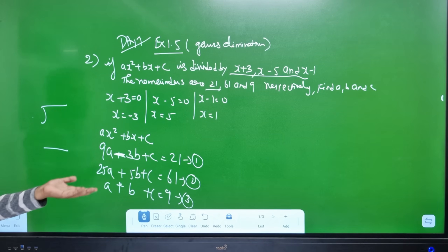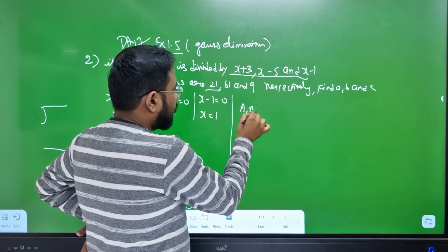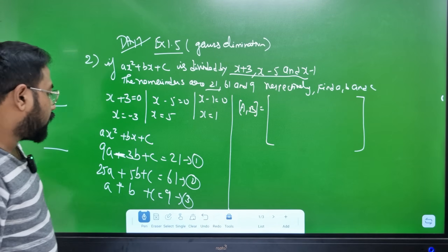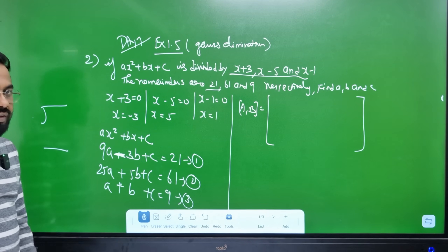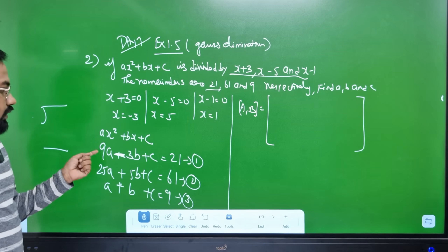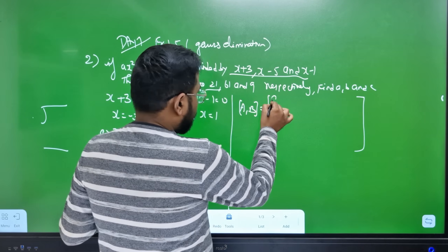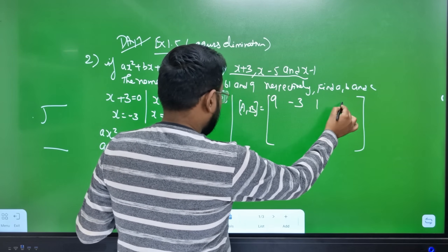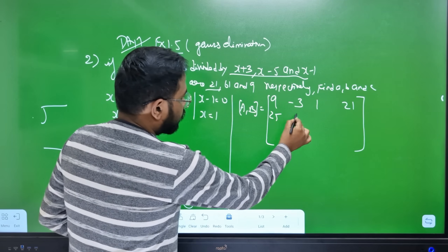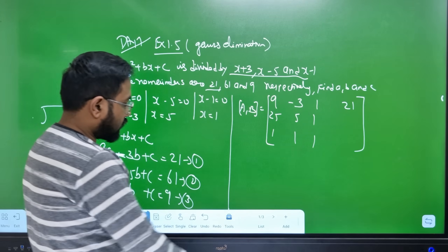Now this is the augmented matrix. We write the coefficients a, b, c for each equation. The augmented matrix rows are: row 1 is 9, 3, 1 | 21; row 2 is 25, 5, 1 | 61; row 3 is 1, 1, 1 | 9. We interchange R1 and R3 so the new row 1 becomes 1, 1, 1 | 9.